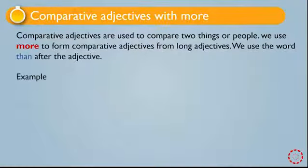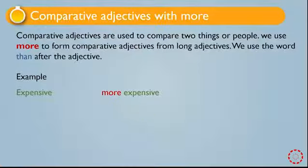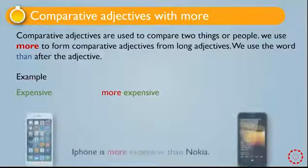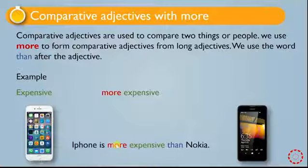Look at the example: expensive, more expensive. Expensive is the adjective and we add more before the adjective to make it a comparative adjective. For example: iPhone is more expensive than Nokia. We have the comparative adjective more expensive, and we add the word than after the adjective in a sentence.